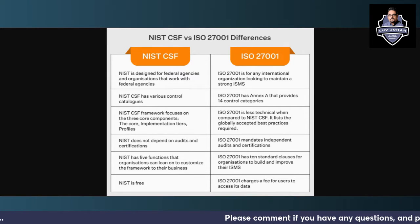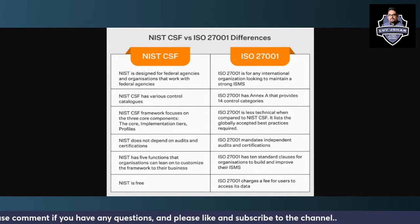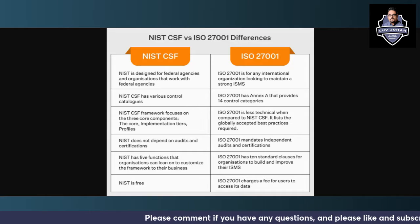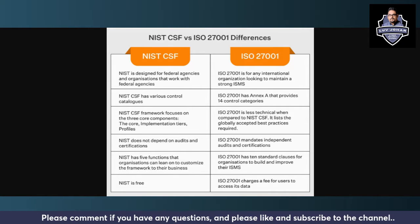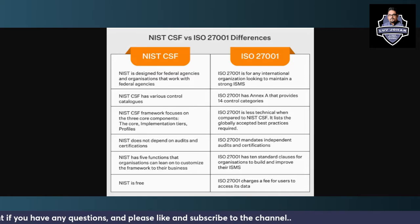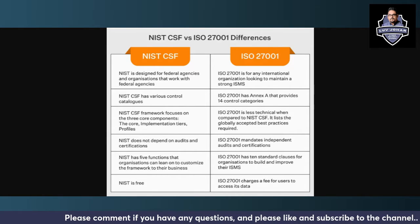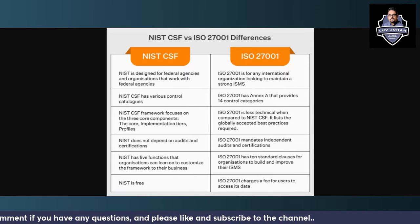NIST is designed for federal agencies in the United States of America and for organizations that work closely with federal agencies. Whereas ISO 27001 is designed for any international organization of any size, any type, any shape, and any number of users, to maintain a strong information security management system. NIST is not for companies — it is designed for federal agencies — however you can take it as a reference since it is a framework. ISO 27001 is designed specifically for companies, organizations, and businesses.